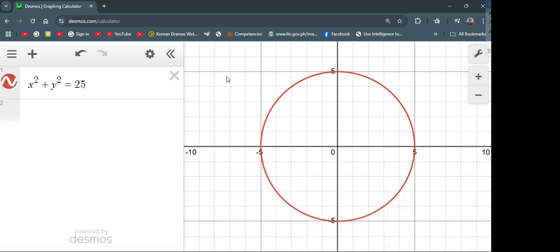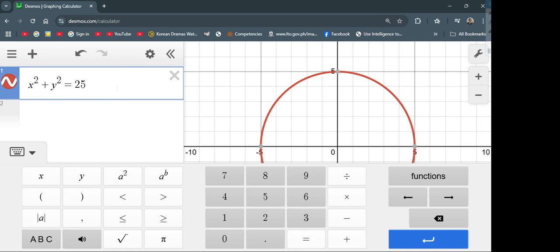As you can see, you have a circle for that particular equation. Now let's input the second equation in our system. We have y squared equal to x plus 5.